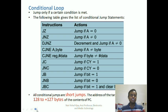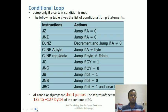Conditional jumps are jumps which depend upon a condition, and mostly these conditions are set by the flag register — conditions such as the zero flag, the carry flag. Sometimes these conditions are also set by some bit position. So these are some of the conditional jump flags.